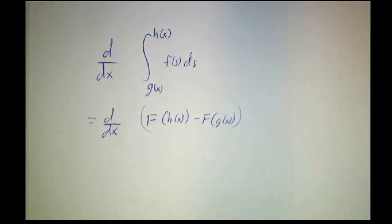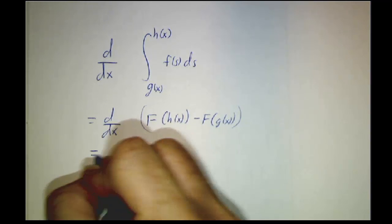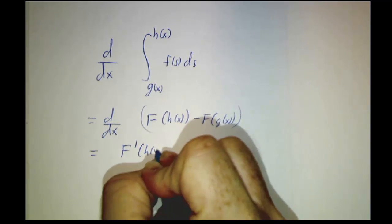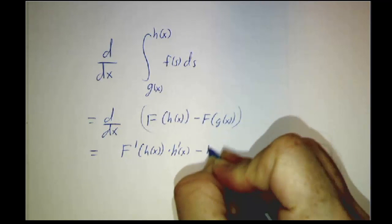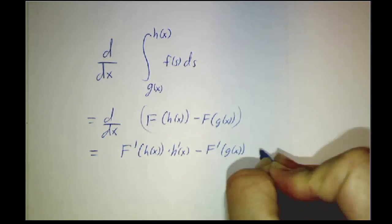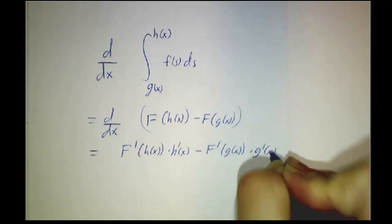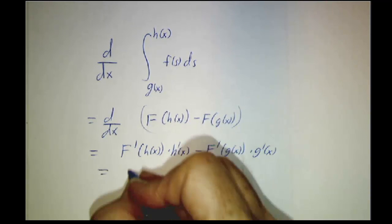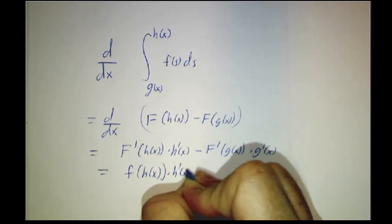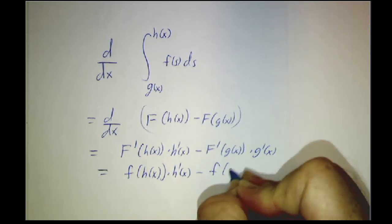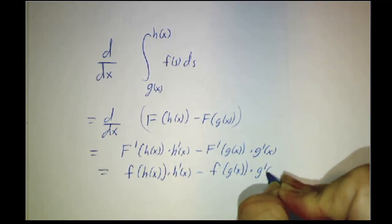And you don't worry about the fact that you don't know a formula for big F because you're going to take its derivative, and you do have a formula for the derivative of big F. It's little f. So this is always going to give you f prime of h of x times h prime of x minus f prime of g of x times g prime of x. And that's going to be f of h of x times h prime of x minus little f of g of x times g prime of x.